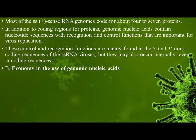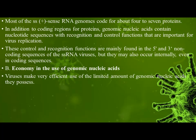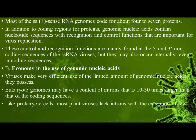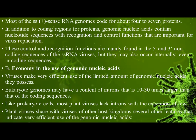Regarding economy in the use of genomic nucleic acids: viruses make very efficient use of the limited amount of genomic nucleic acids they possess. Eukaryote genomes may have a content of introns that is 10 to 30 times larger than that of the coding sequences. Like prokaryote cells, most plant viruses lack introns, with the exception of a few. Plant viruses share with viruses of other host kingdoms several features that indicate very efficient use of genomic nucleic acids.